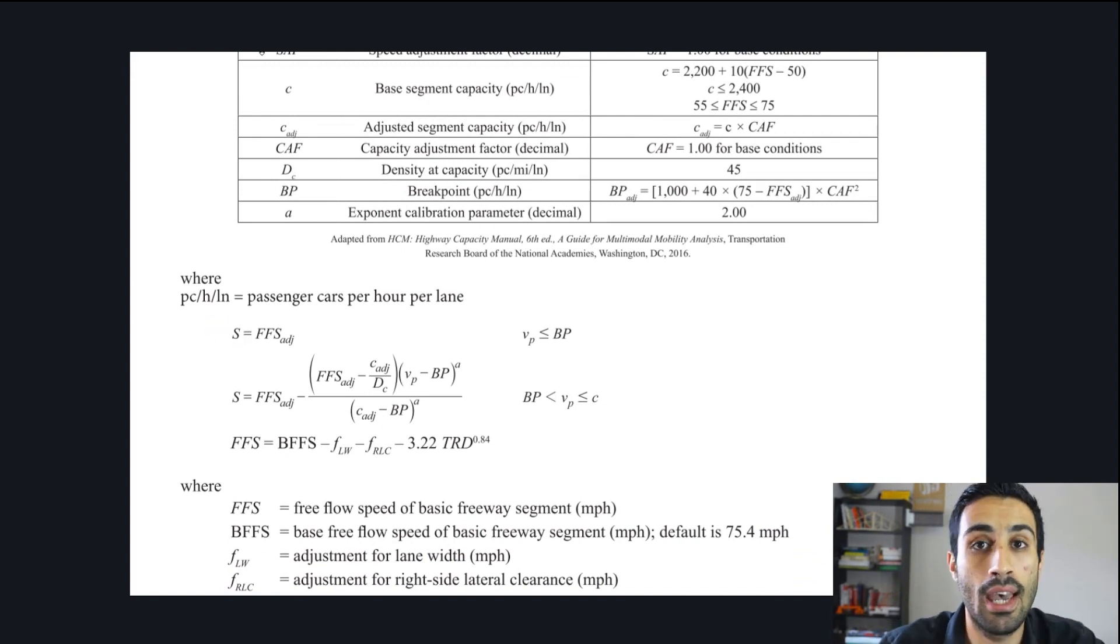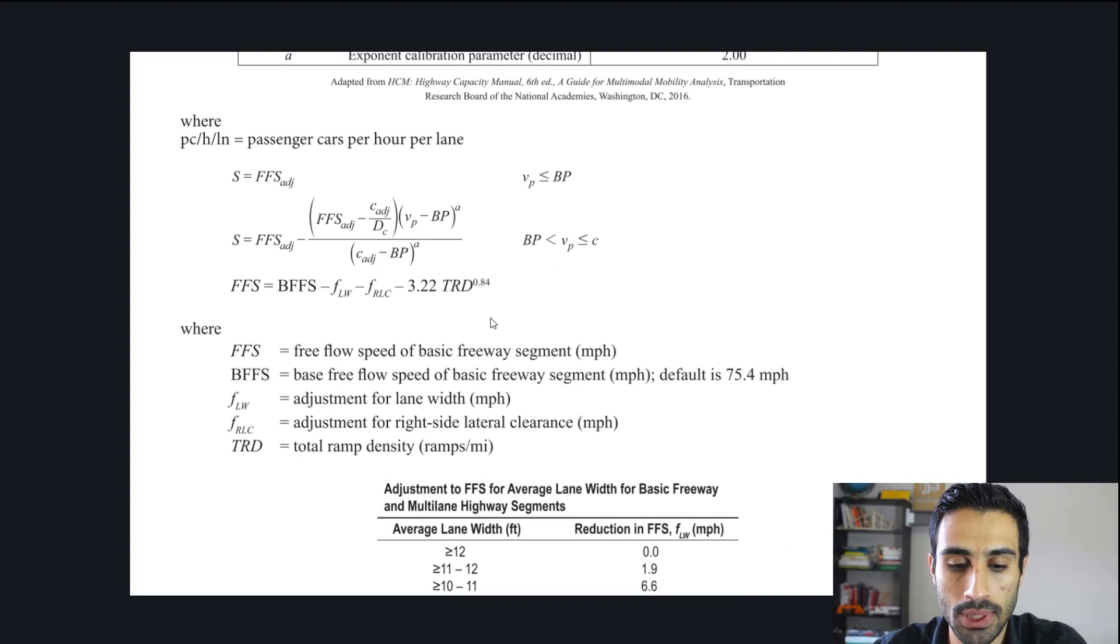That's going to be the third step is finding the S value. Then with the S value, we can find the density. The density is just the demand flow rate divided by the speed. Then with the density, we can find the level of service. It's all interconnected, but the biggest thing is finding that speed, which is the S value, the operating speed.